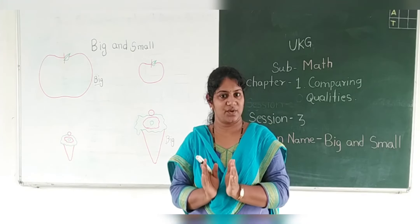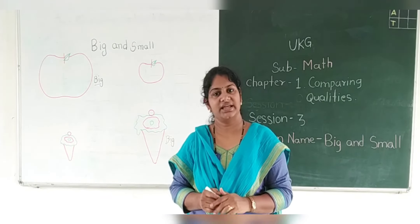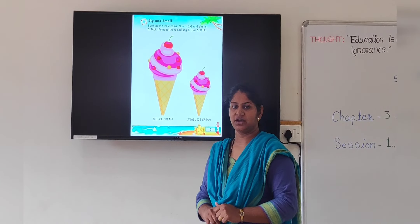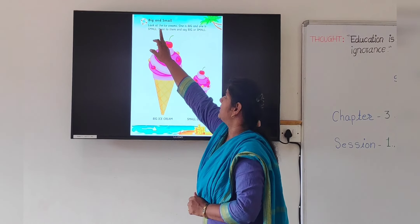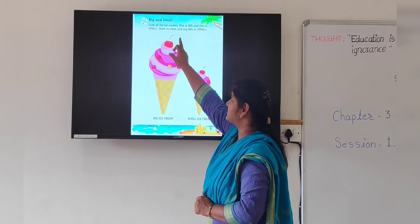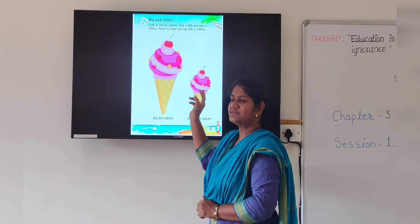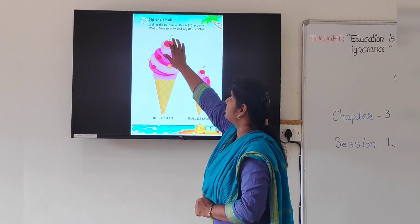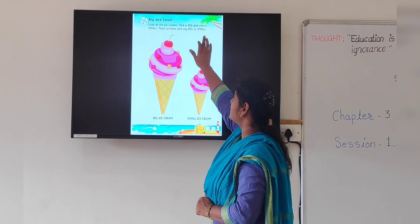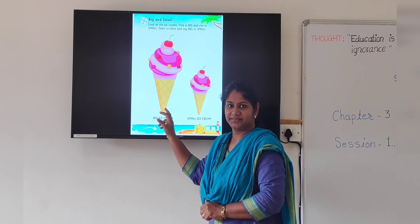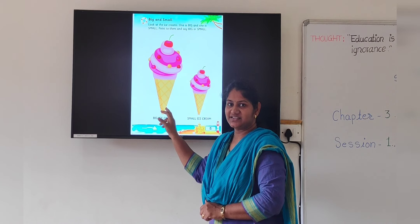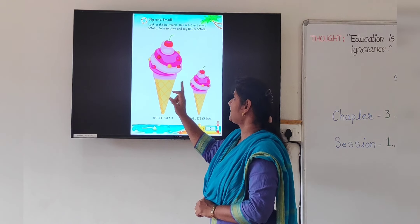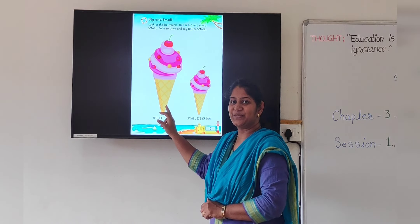Have you understood big and small? Now I am going to show you the textbook. Open your math textbook, page number 5 — big and small. Look at the ice creams. These are ice creams: one is big and one is small. Point to them and say big or small. Tell me fast — this one is small. Yes, this one is small, and this one is the big ice cream. Right?